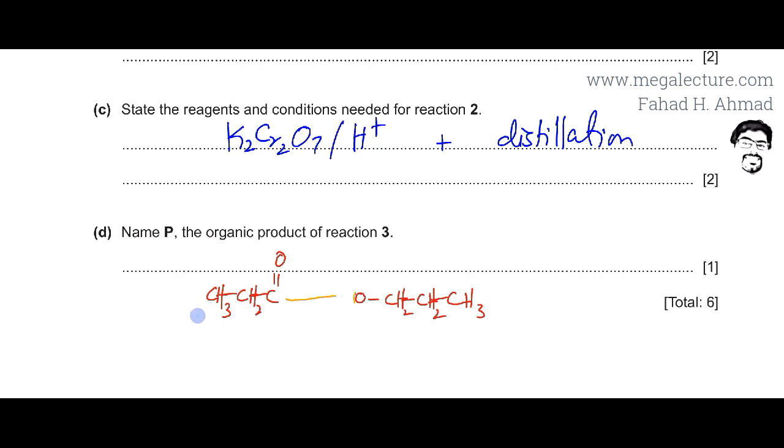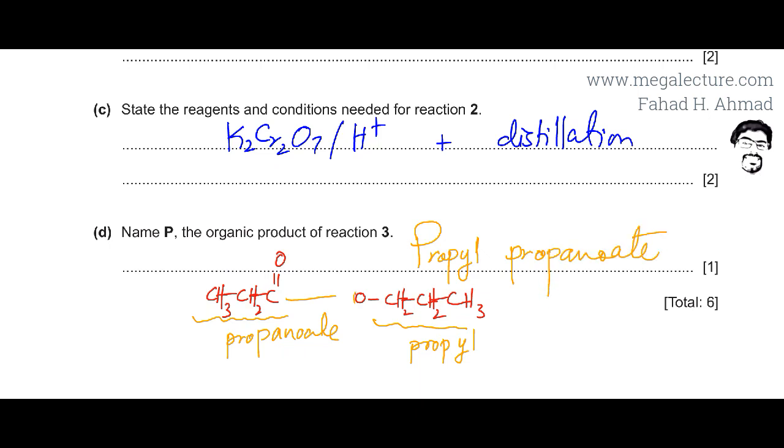The carboxylic acid side is prop - 3 carbon atoms. The alcohol side is also prop. It has 3 carbon atoms. The alcohol side ends with -yl and the carboxylic acid side ends with -oate. So its name is going to be propyl propanoate. That would be the name of the molecule.